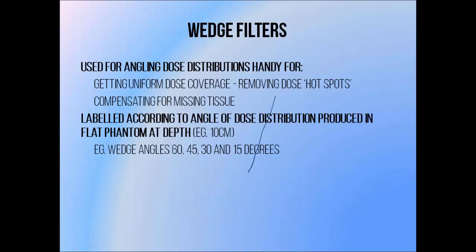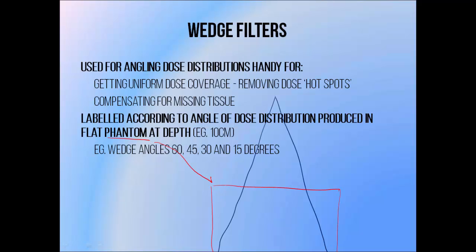A normal photon beam will produce a relatively flat dose distribution in a flat phantom. A phantom is something that we can use to simulate a patient during radiation treatment. We use them for research, equipment commissioning, and quality assurance. They are generally made of materials that are similar to human tissue in how they interact with radiation.